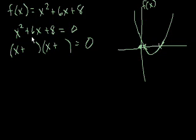The method we're going to use is, we look at the coefficient on this x term, 6, and we say, what two numbers will add up to 6? And when those same two numbers are multiplied, you're going to get 8.